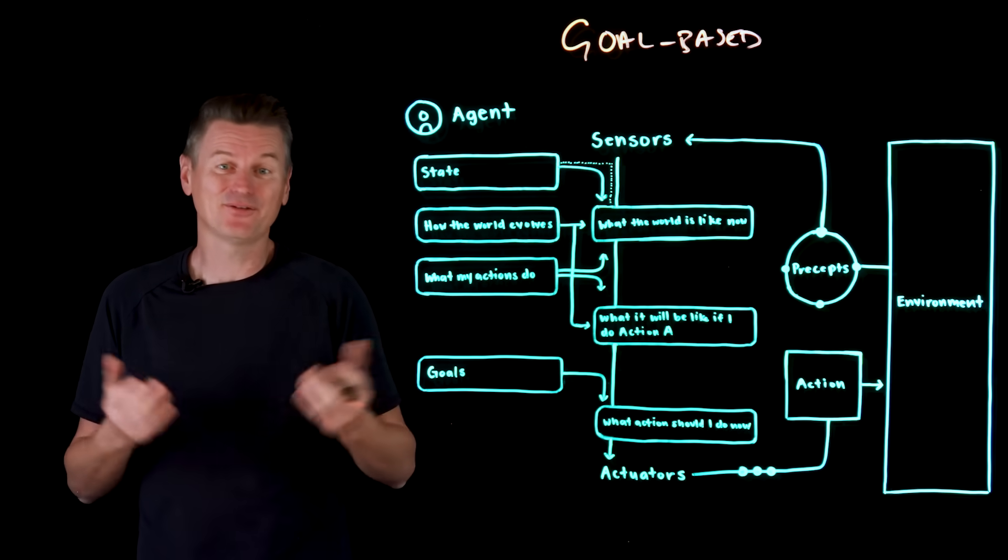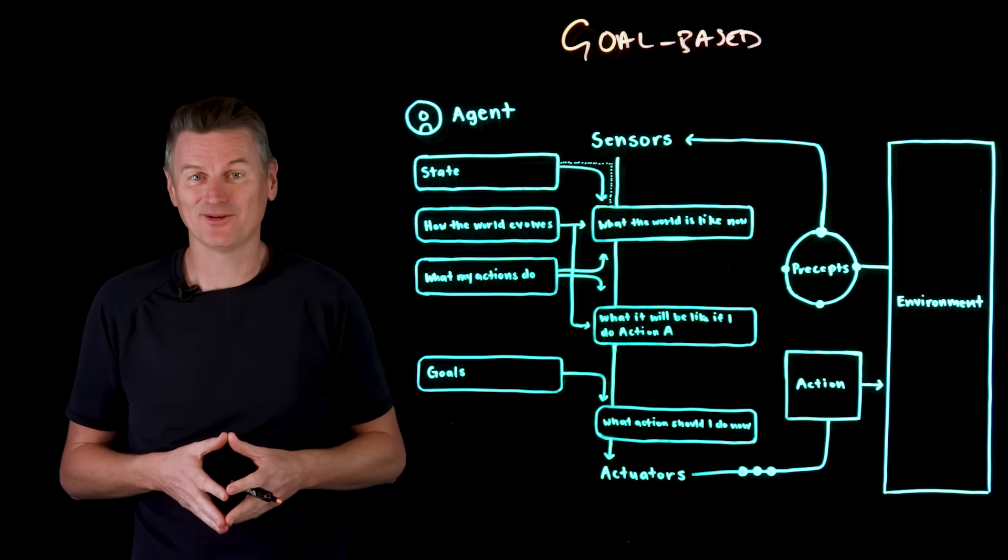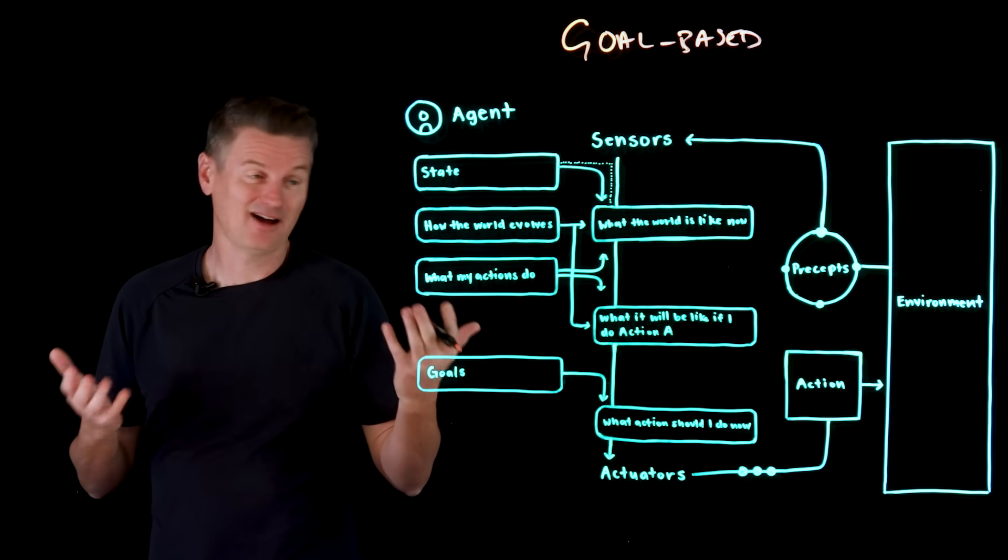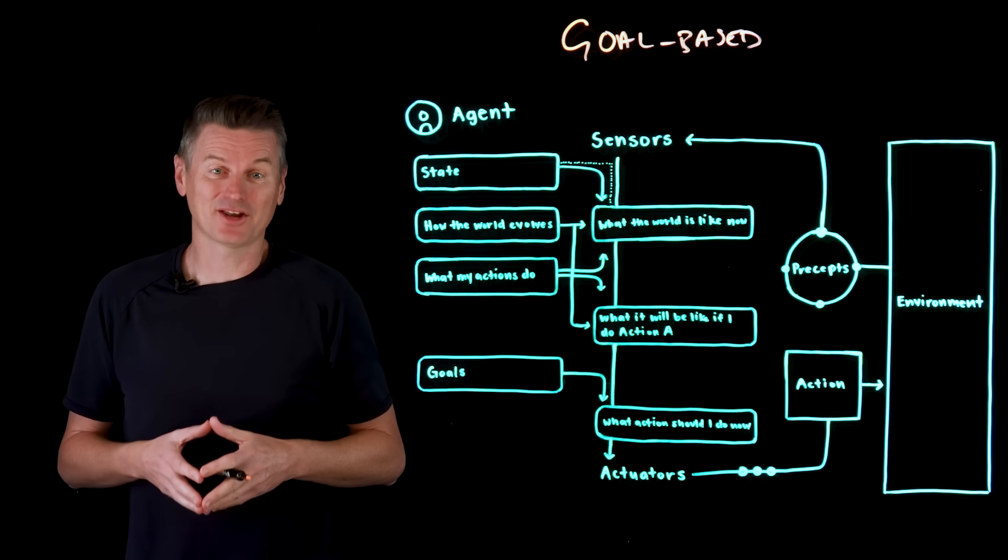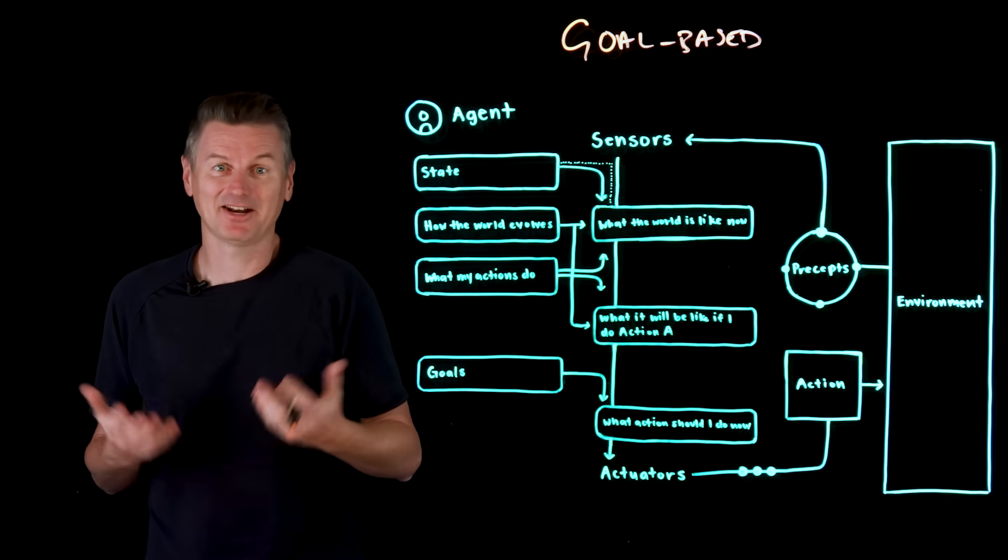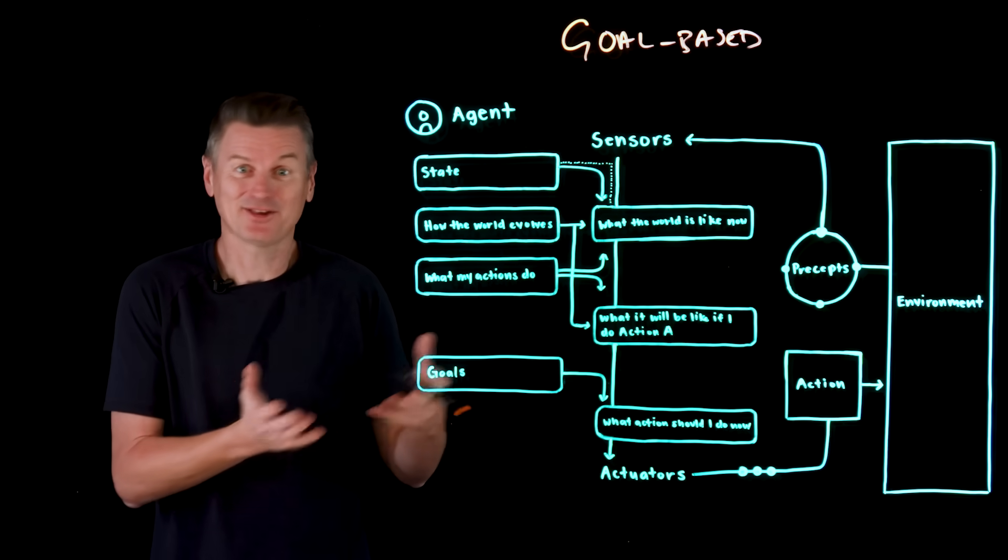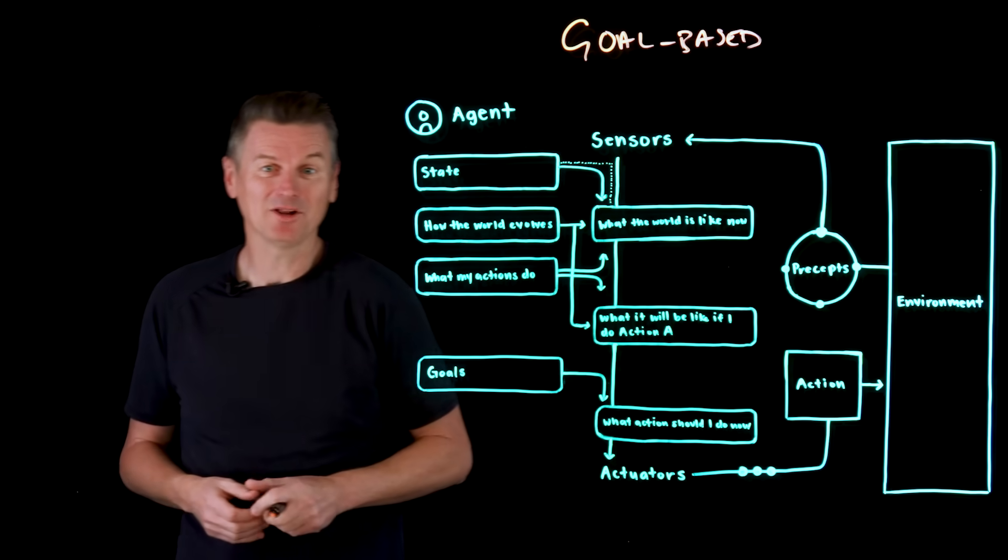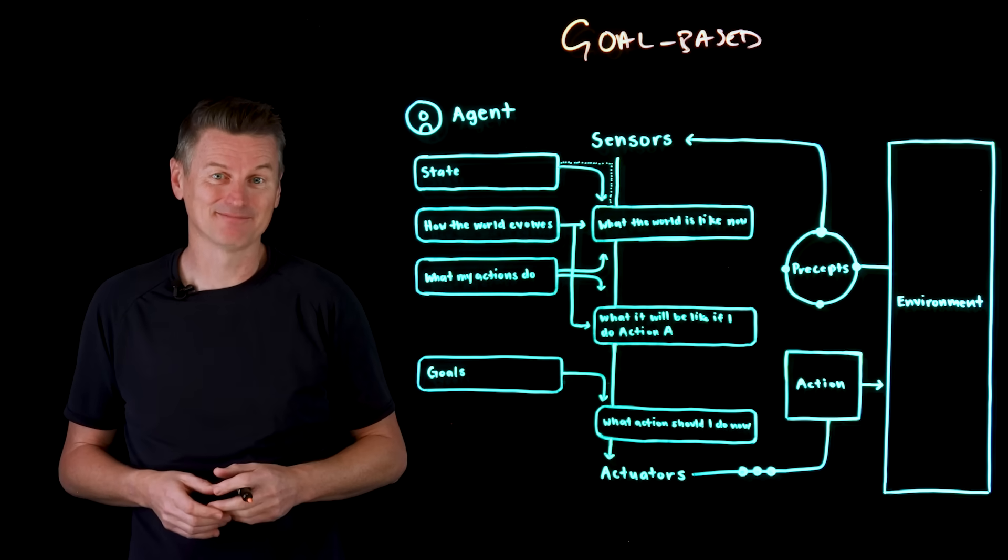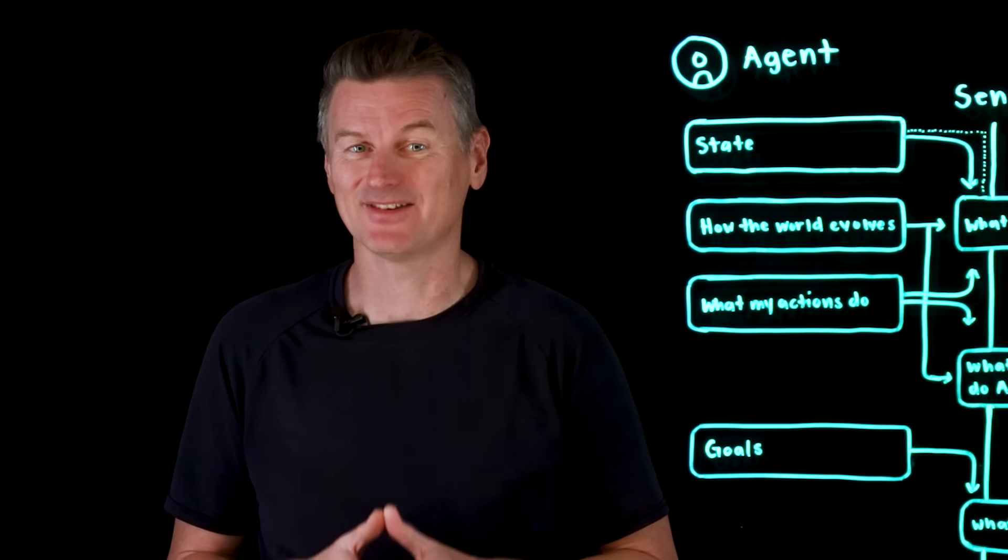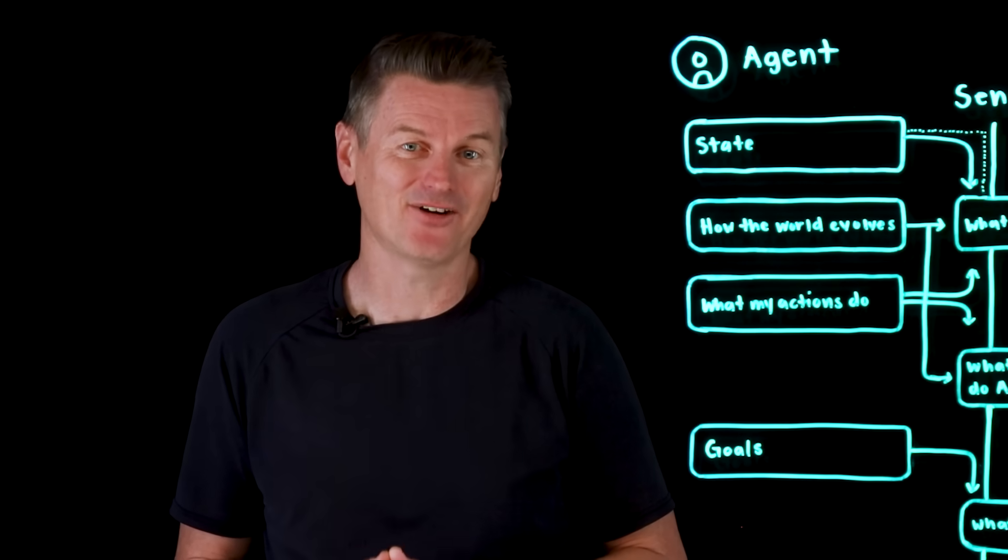So consider a self-driving car. If the goal is to get to destination X, it will consider its state, which is I'm on main street. It will then generate a prediction. If I turn left, I'll head towards the highway. And it will ask, will that help me reach destination X? And if the answer is yes, then the action will be to turn left. Goal-based agents are widely used in robotics and simulations where a clear objective is set and adaptation to the environment is required.